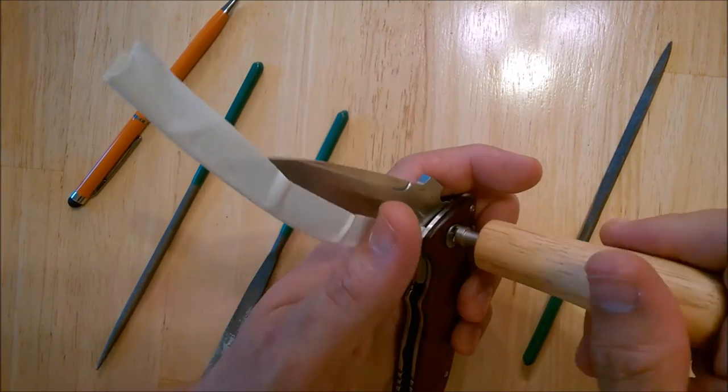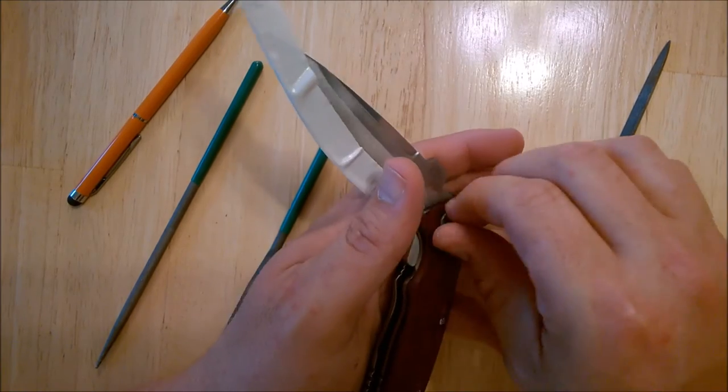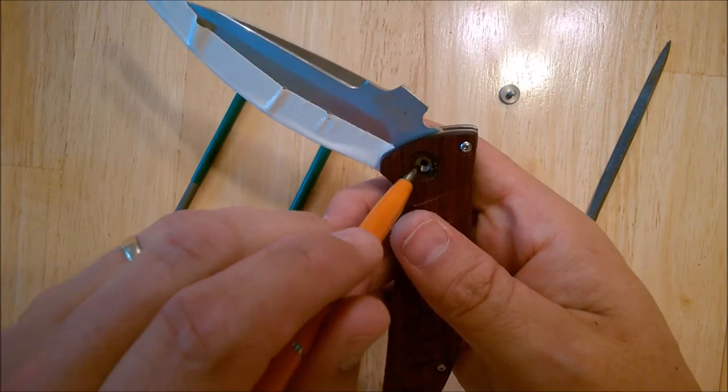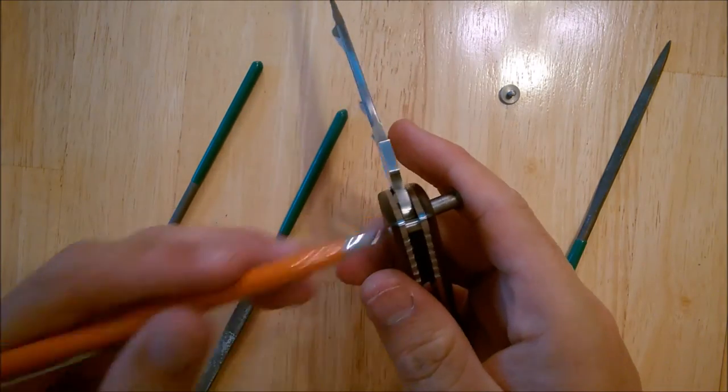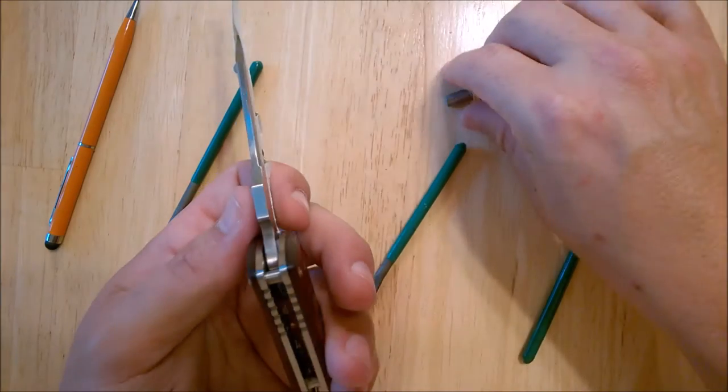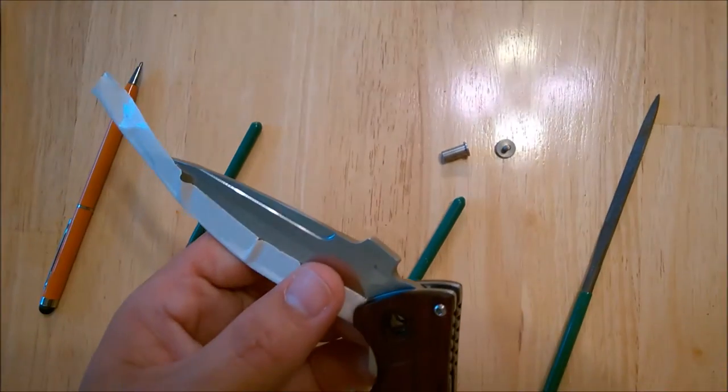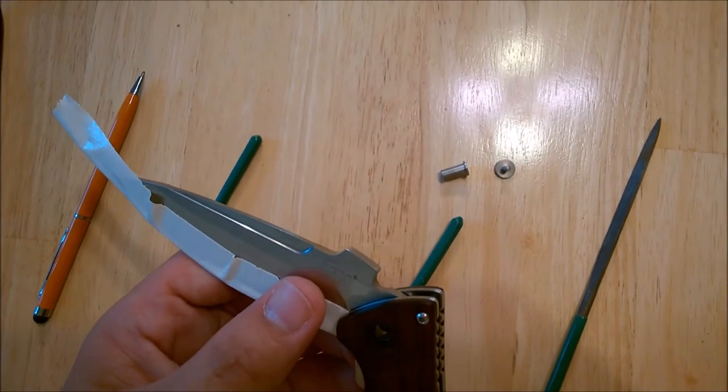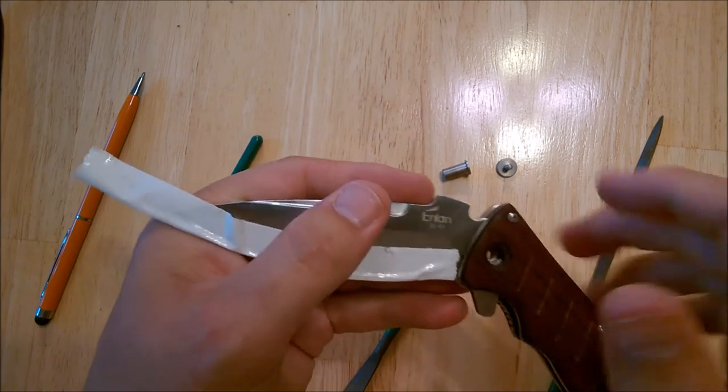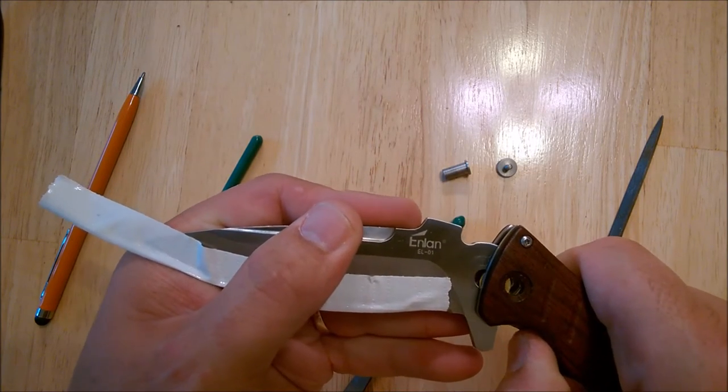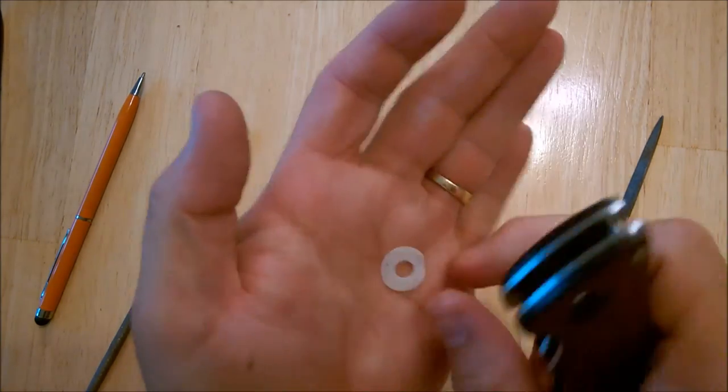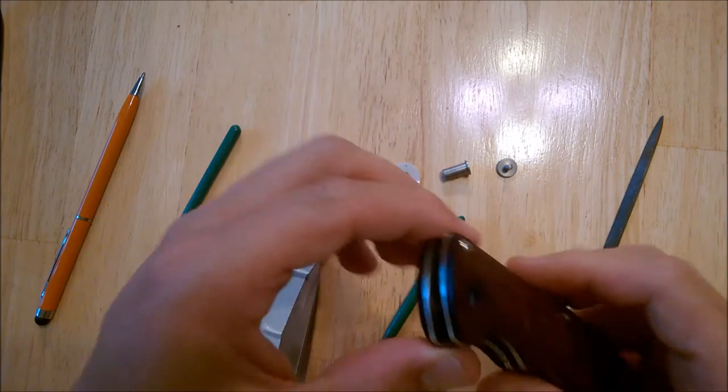I unlock the knife and then I got to push the bolt through. There you go, it's come through. Notice the bolt has that flat side there. Now I hold the liner lock down with my thumb right here and I pull the knife blade out. Take the washer away, get the other washer out of the way. We're all done.